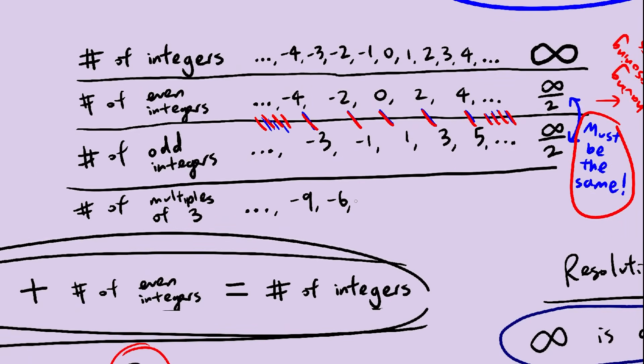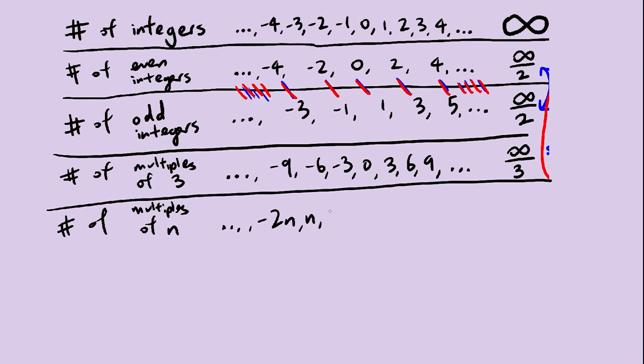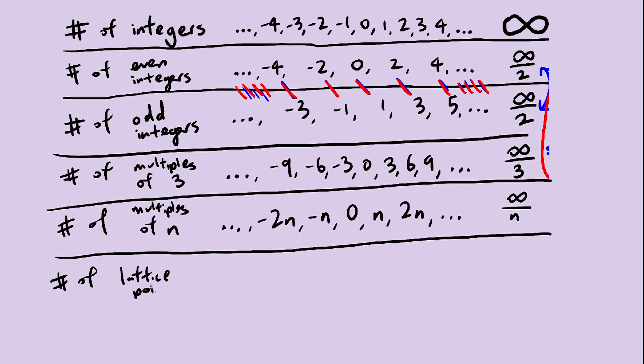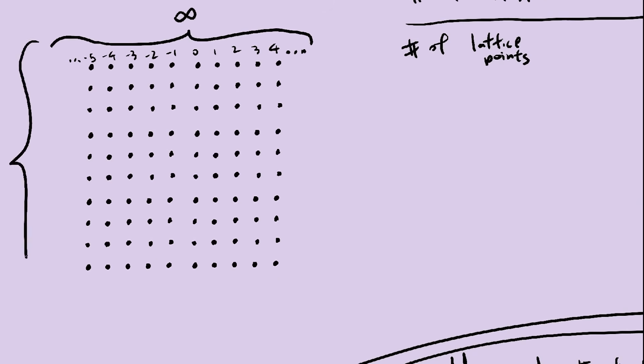True bijections only shift numbers instead of widening them or doing anything else. We can find the number of multiples of 3, multiples of 4, multiples of any integer, really. The number of lattice points in an infinite grid is infinity squared. Again, no problems.